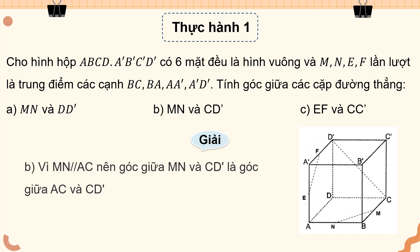Câu B: xác định góc giữa MN và CD'. MN song song với AC. Góc giữa MN và CD' chính là góc giữa AC và CD'. Hai đường này có chung đỉnh C. Góc tạo bởi chính là góc giữa đường AC và đường DC'.